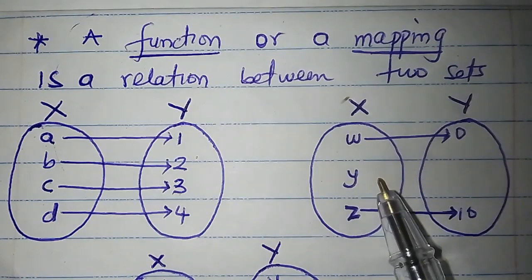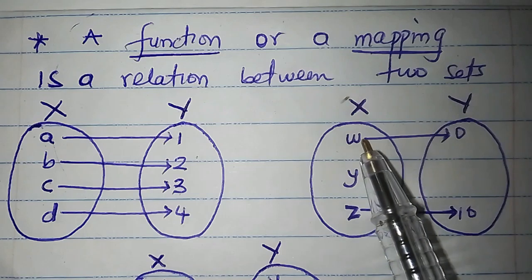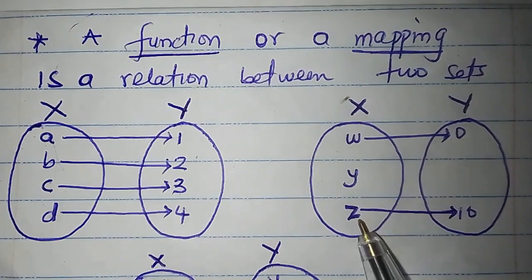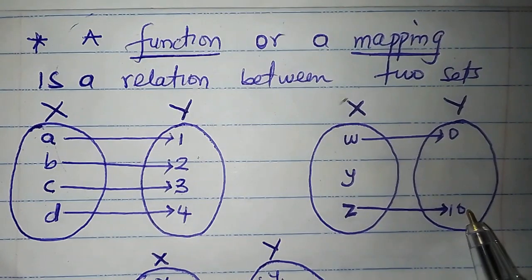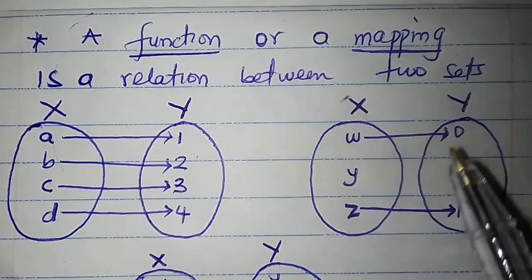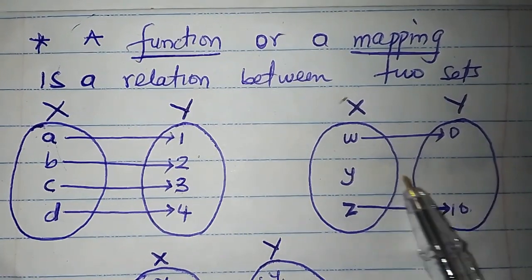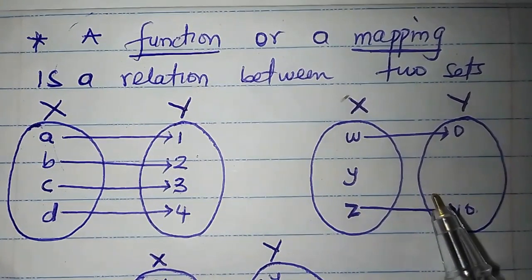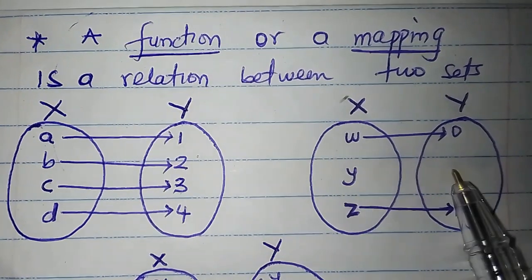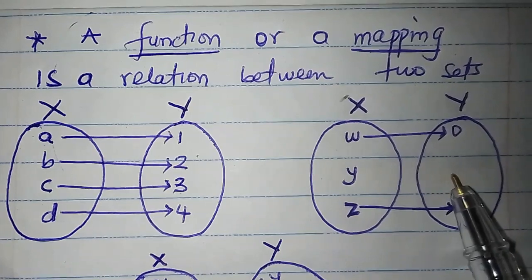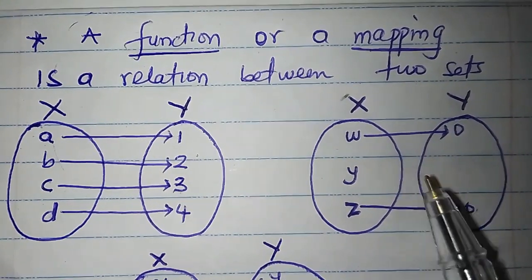What about this? Set X has members W, Y, and Z. Set Y has members 0 and 10. W is related to 0, Z is related to 10, but Y has no relation. So this is not a function, because one of the members of set X is not related to any member of set Y.